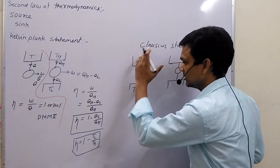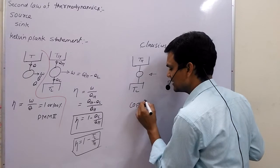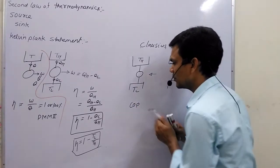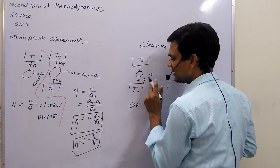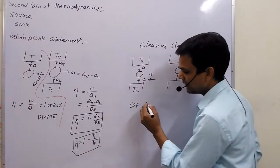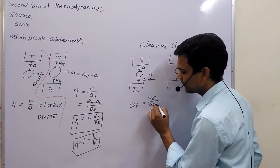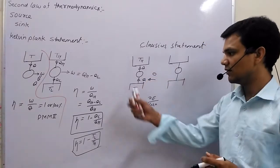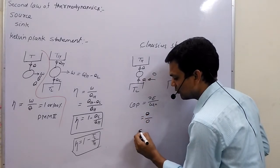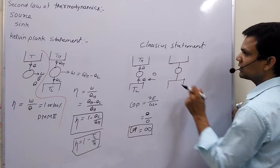If we consider the impossible case of the Clausius statement, the COP — that is, the coefficient of performance — tends to infinity. For example, suppose our desired effect is Q: we are extracting Q amount of energy from the low-temperature reservoir and supplying Q amount of energy to the higher-temperature reservoir. The COP is desired effect upon work input. In this impossible case, we are supplying zero work, so COP equals Q divided by zero, which tends to infinity — an impossible case in practical life.